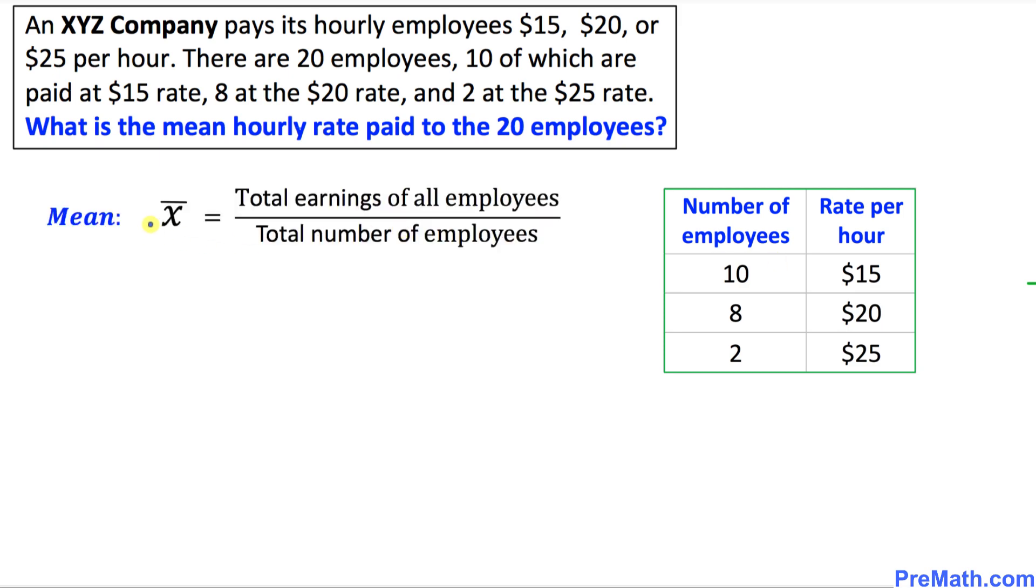Here is the formula that we will be using to find the mean. Mean is represented by x̄, which is equal to total earnings of all employees divided by total number of employees.